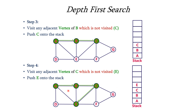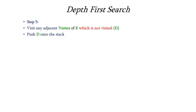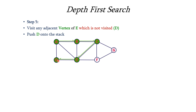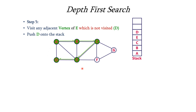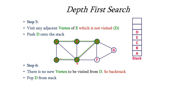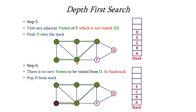All visited nodes are shaded green. Now E is at the top of the stack. The adjacent vertices of E are D, A, and B. A and B are already visited, so we consider D. D is shaded and pushed onto the top of the stack. For D we don't have any non-visited vertex since its neighbors A and E are already visited. So we perform backtracking — we pop D from the top of the stack and go back to E.